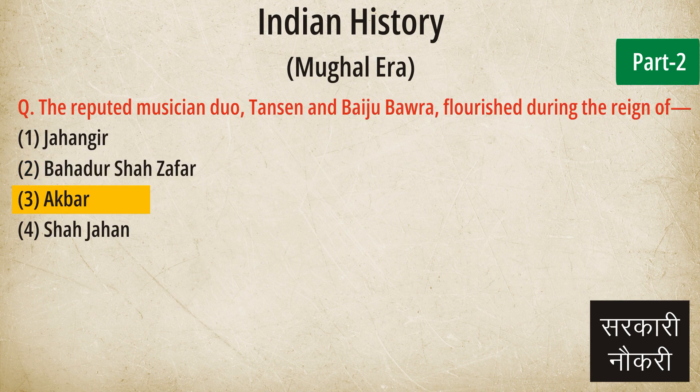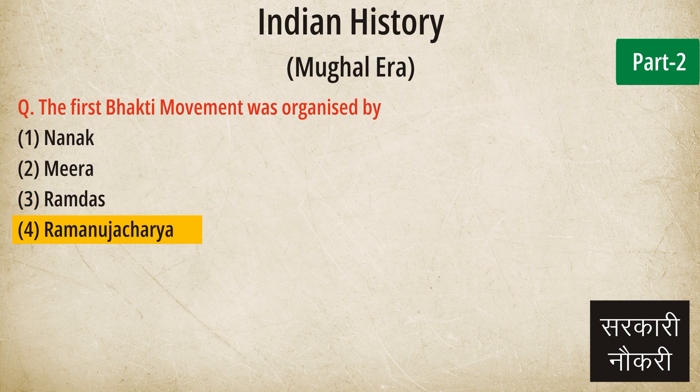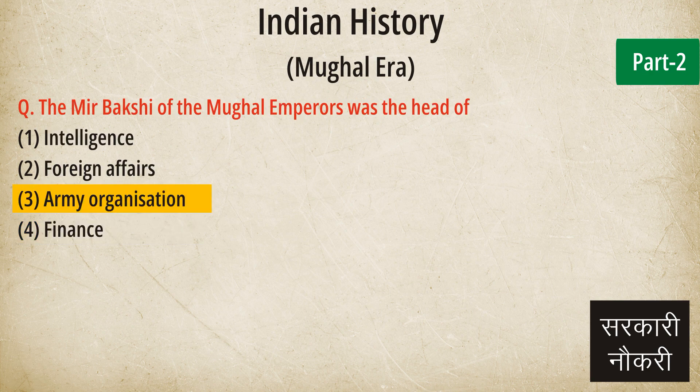Question: The reputed musician duo, Tansen and Baiju Bawra, flourished during the reign of. Answer: Akbar. Question: The first Bhakti movement was organized by. Answer: Ramanujacharya. Question: The Mir Bakshi of the Mughal emperors was the head of. Answer: Army organization.